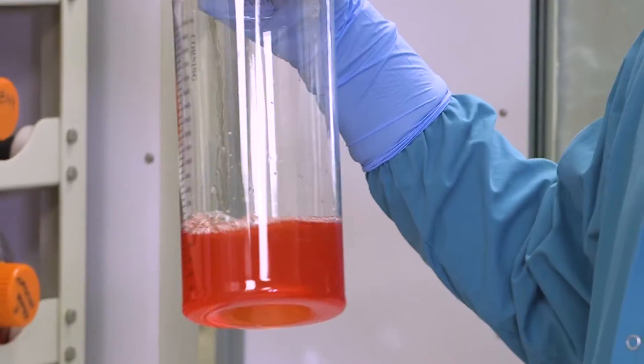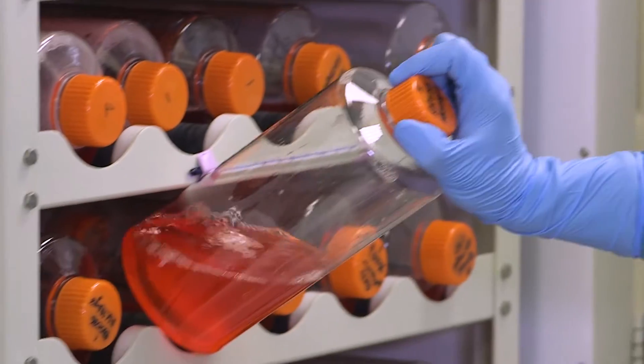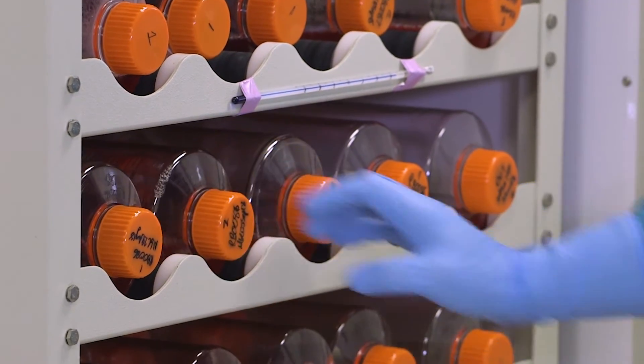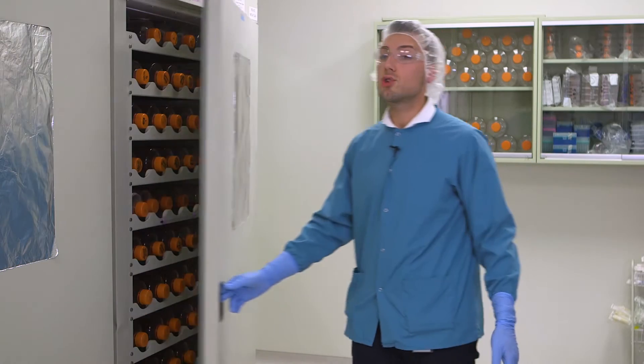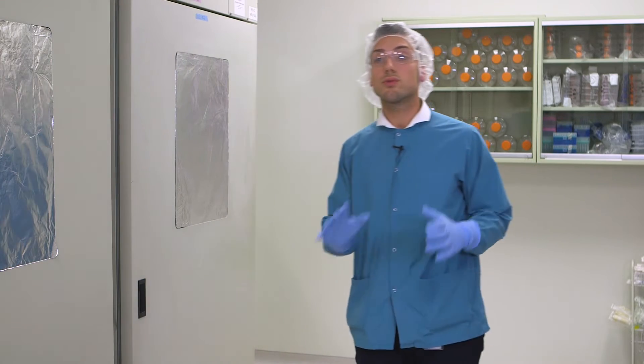The roller bottle process typically takes around six to eight weeks from initial cell line thaw all the way through culture supernatant harvest into concentration.